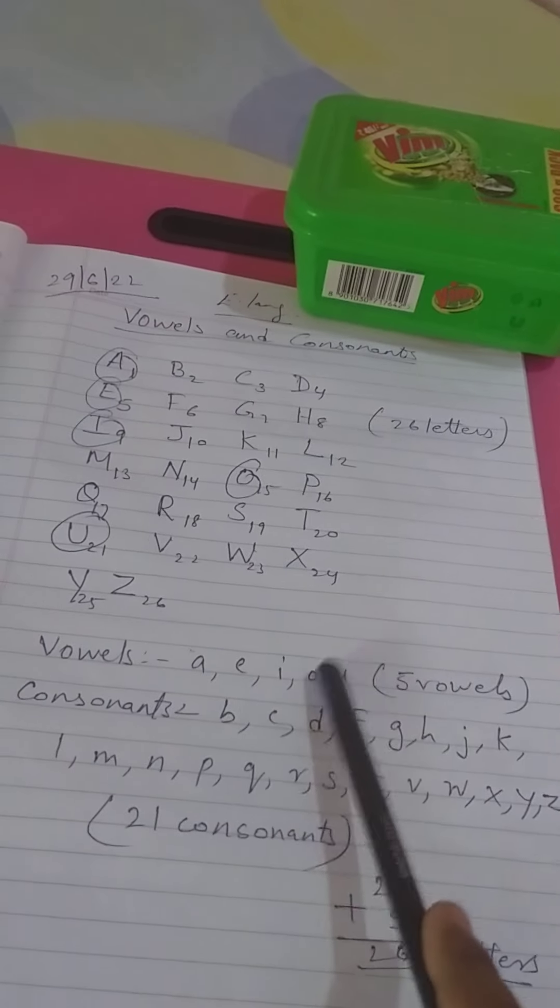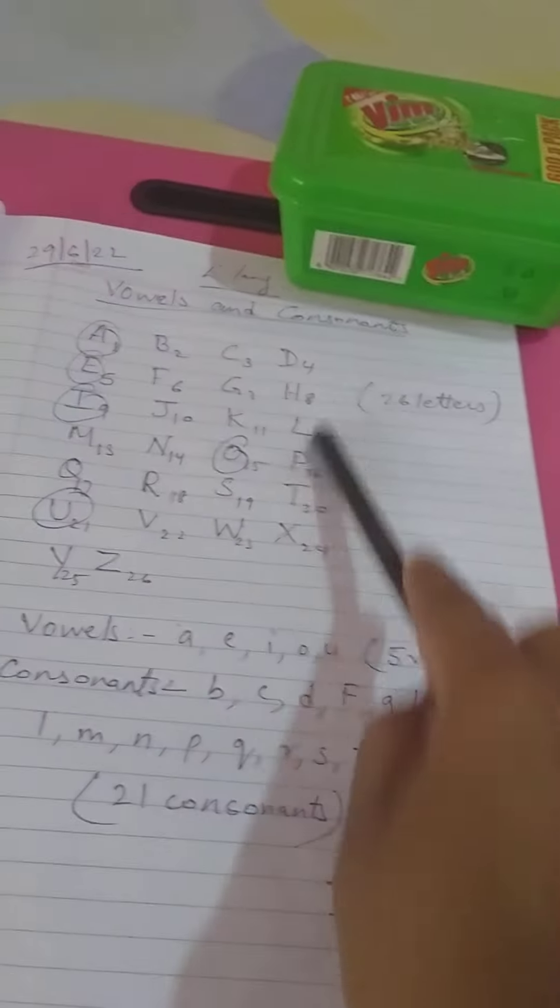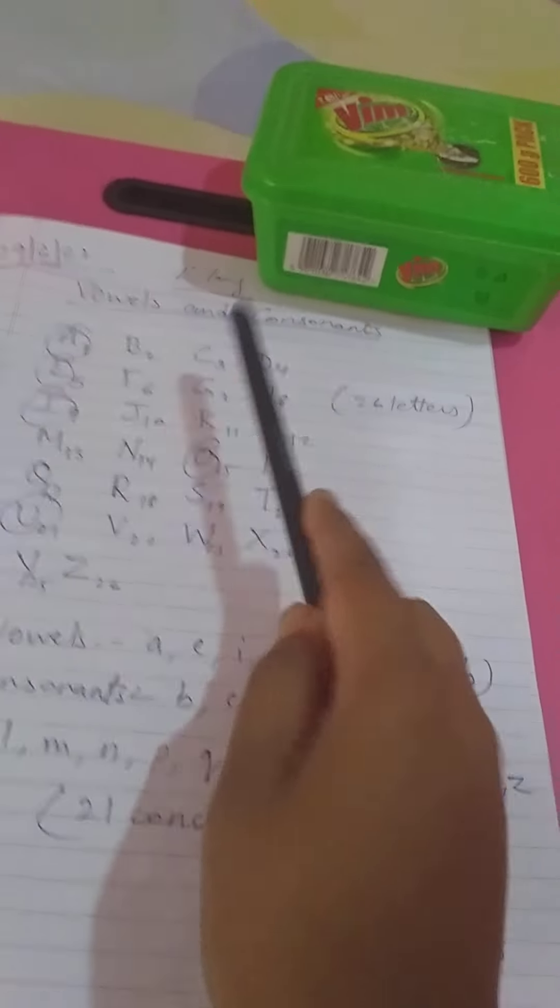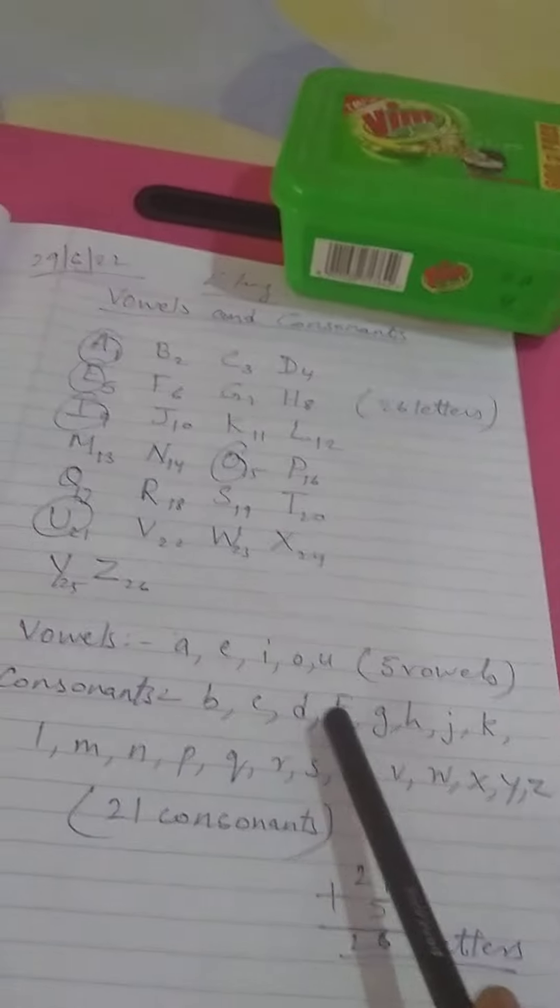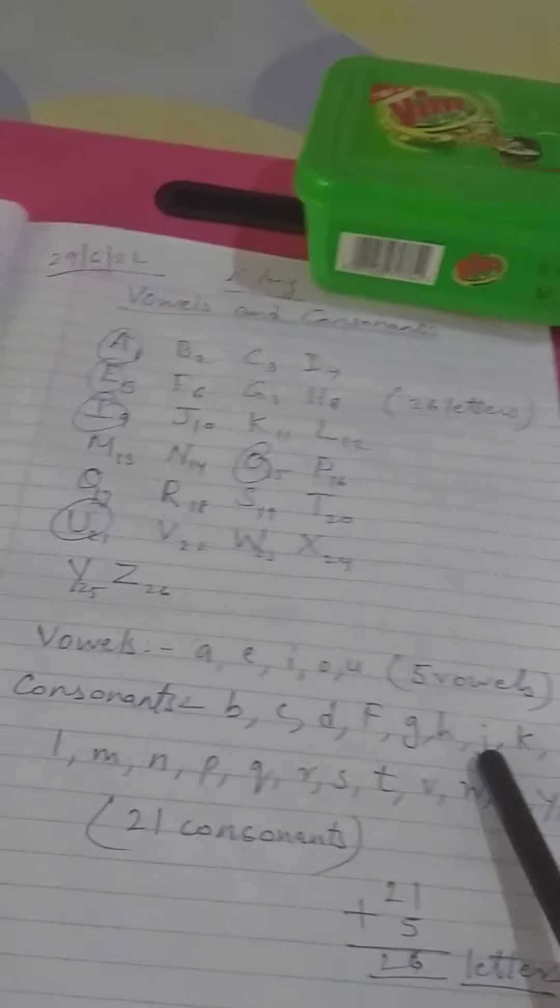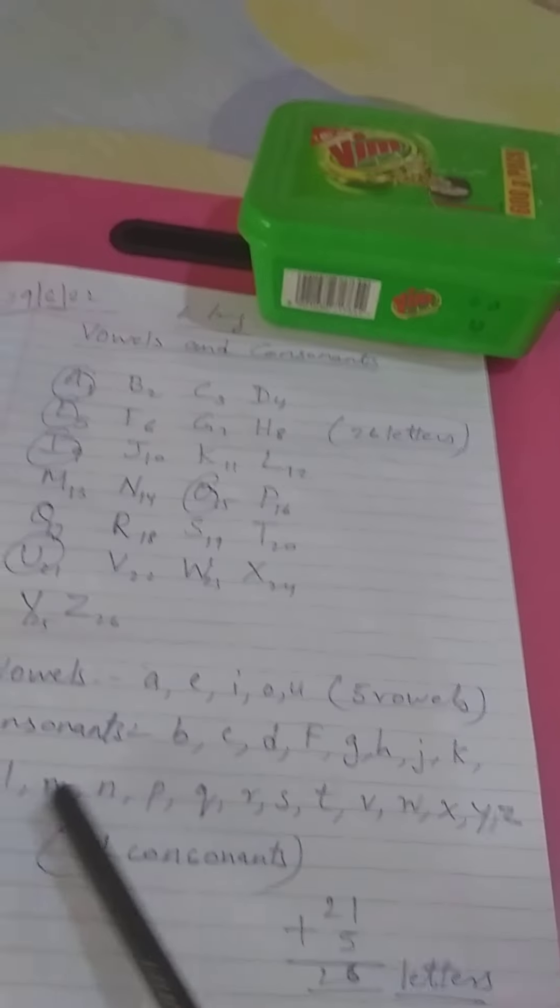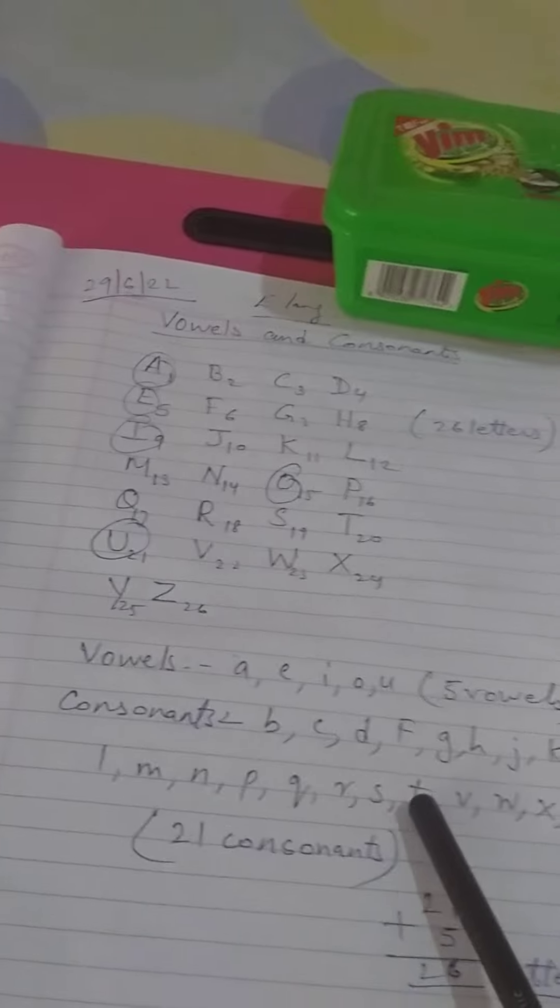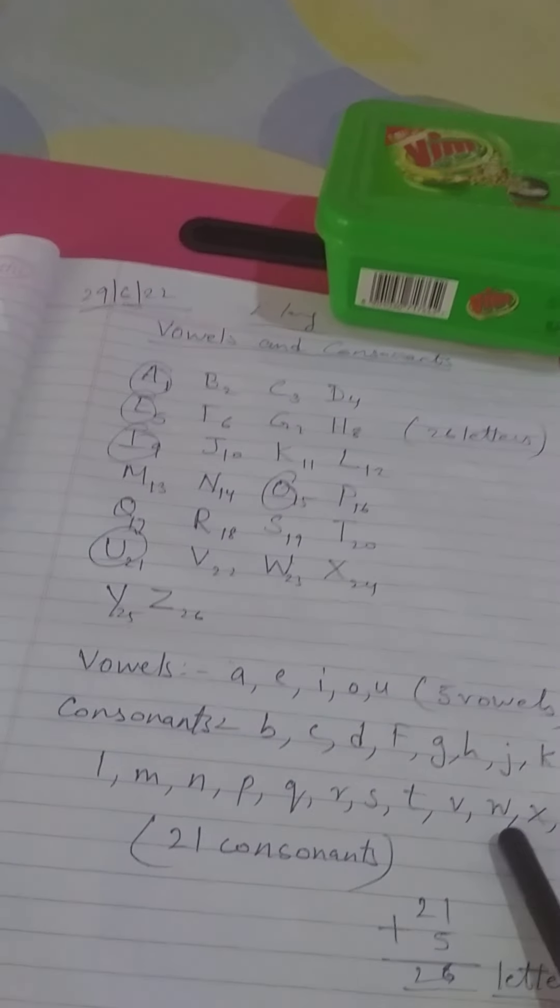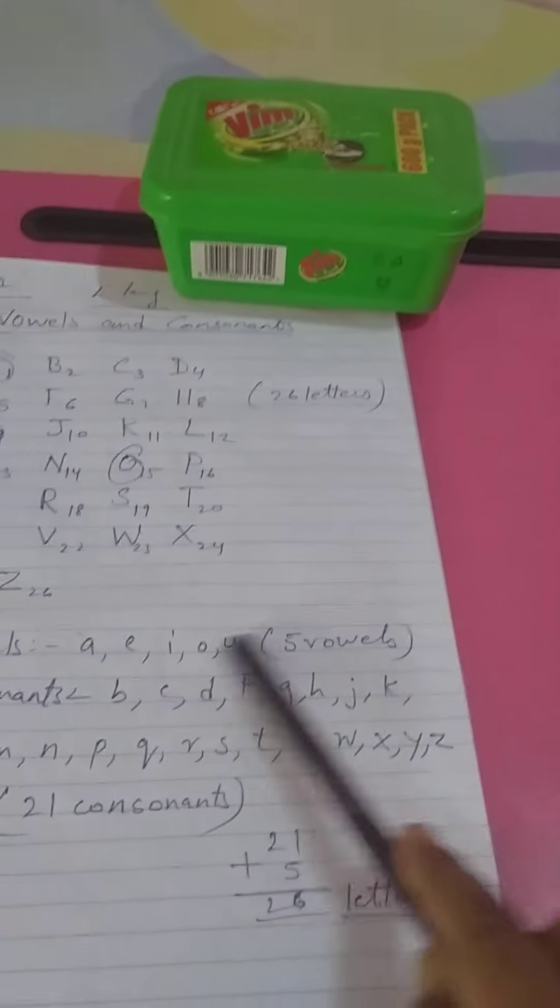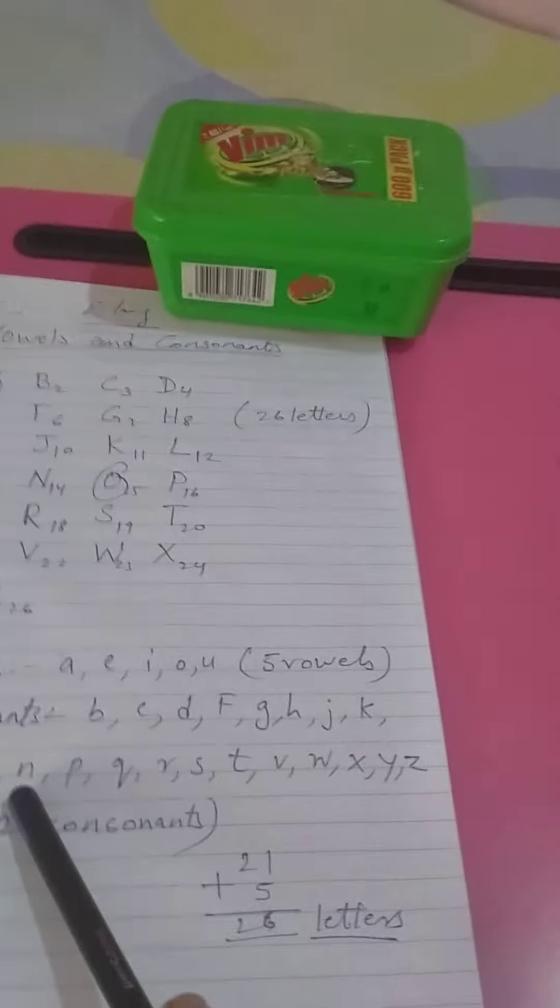And the rest are consonants: B, C, D, F, G, H, J, K, L, M, N, P, Q, R, S, T, V, W, X, Y, and Z.